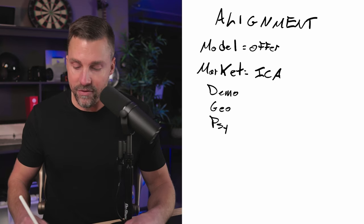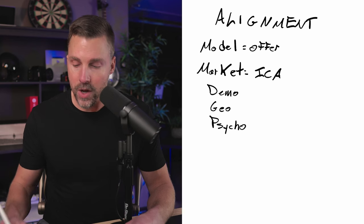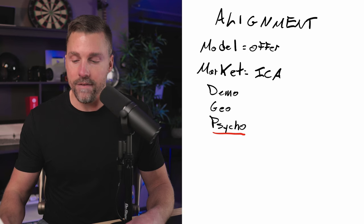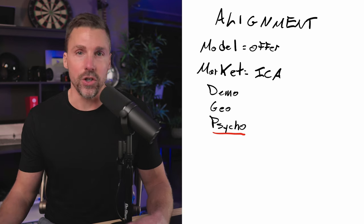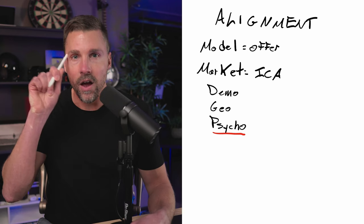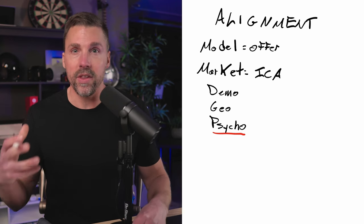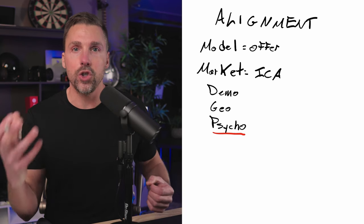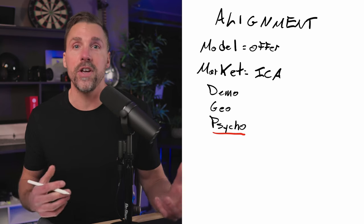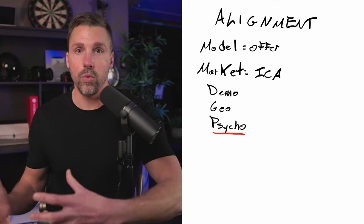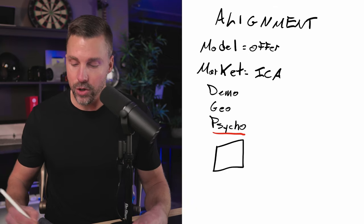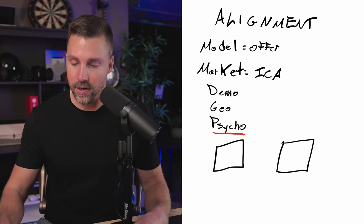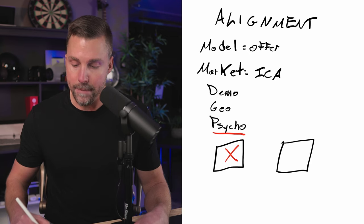The most important of all is psychographic details: values, attitudes, interests, beliefs, lifestyles, organizations, groups, affiliations — all of the head stuff. What do they feel? What do they like? What are their pains, problems, fears, miseries? What are their wants, dreams, goals, desires? I typically break that down into two buckets: 'miseries' — fears, pains, problems, frustrations, all the things they're trying to get away from — and 'miracles' — their wants, goals, dreams, desires.